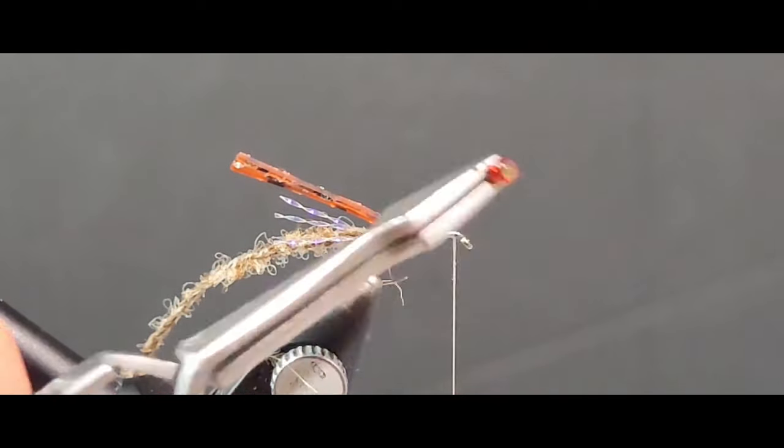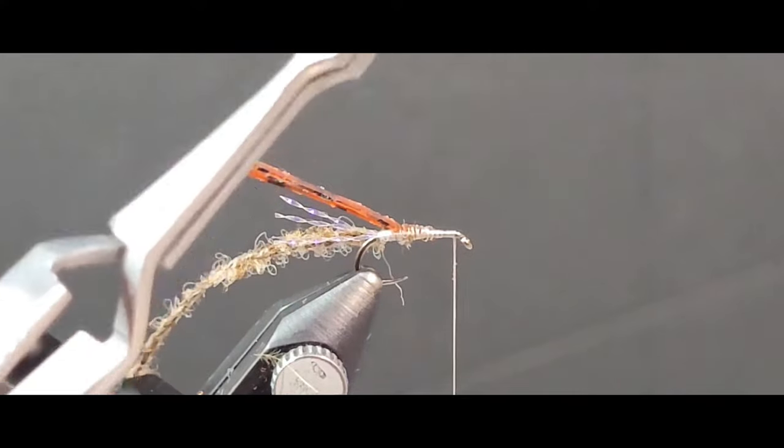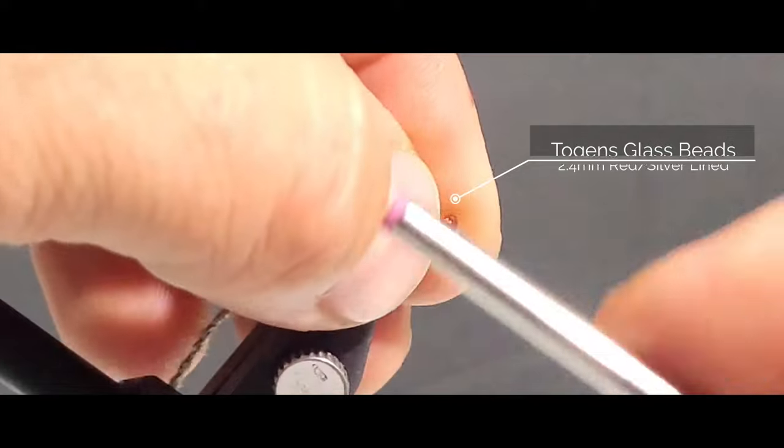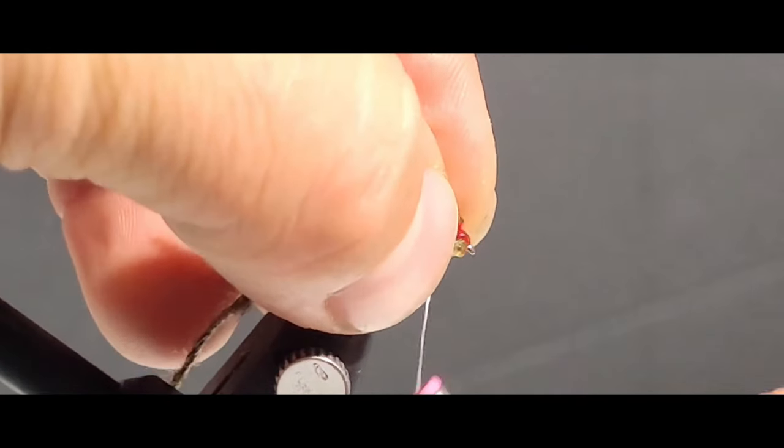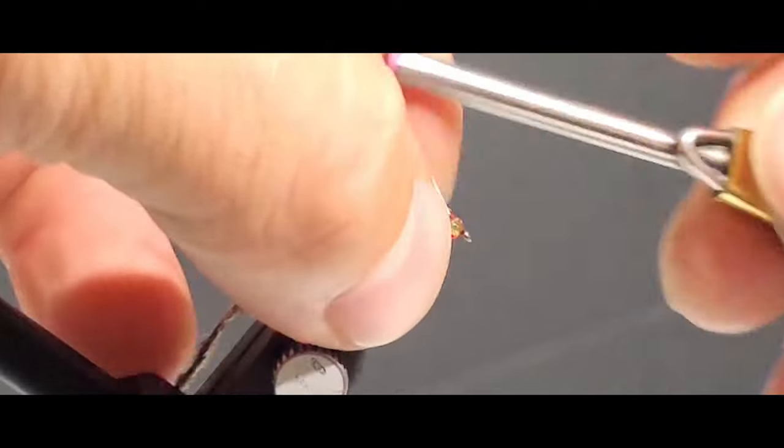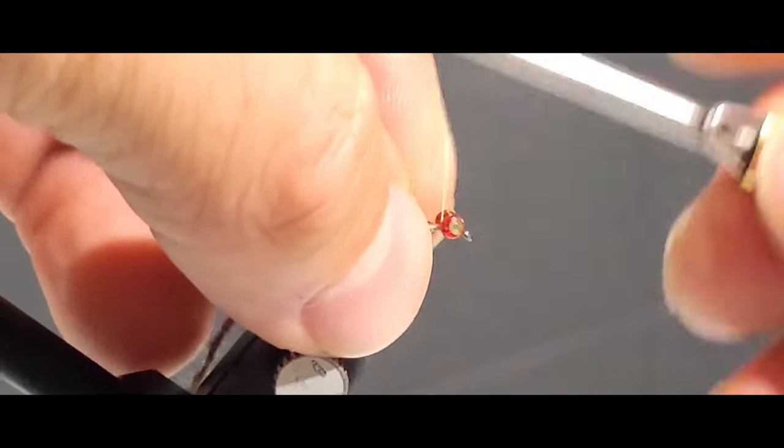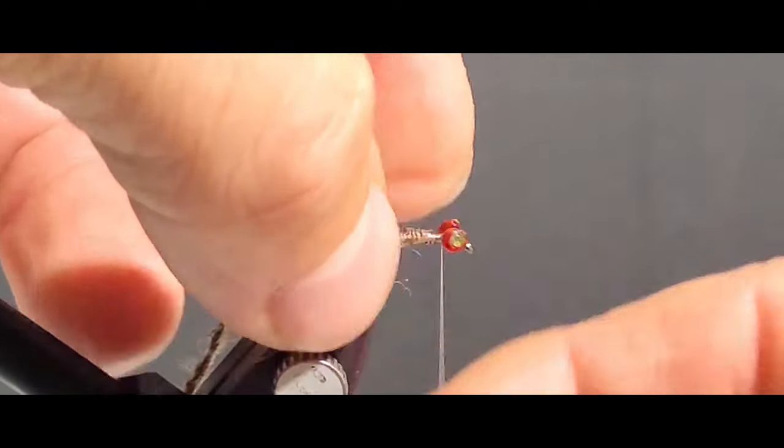Then just flatten that out and it makes a really realistic looking set of eyes there. Then wrap that up a few times with your Nano Silk that way you're not going to be dropping those eyes all over your fly tying desk. Then a couple securing figure eight wraps to make sure that doesn't spin around on you.